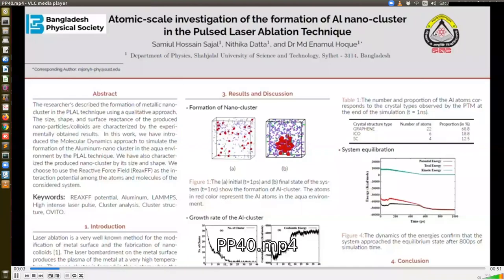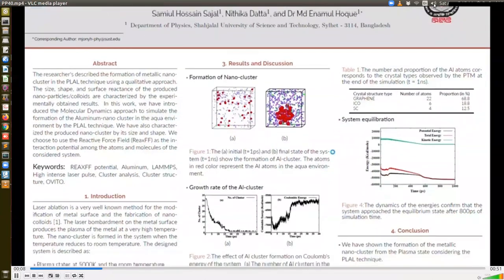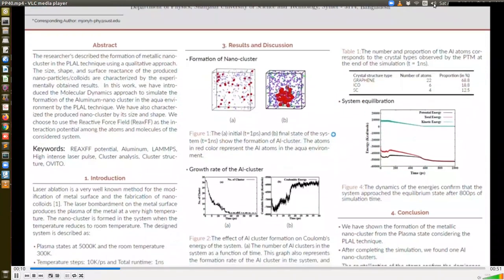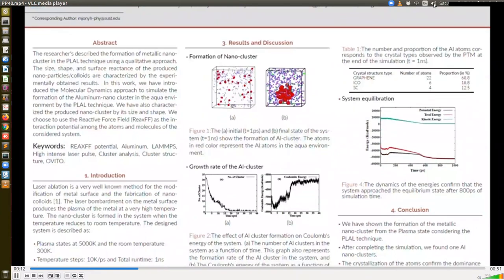In this work, we have done a molecular dynamics simulation to investigate the formation of aluminum nanocluster in the pulsed laser ablation technique using DFT potential. When an intense laser beam pulse on a metal surface, it produces metal plasma at a large temperature. The initial configuration of our simulation is designed at 5000 Kelvin temperature when aluminum is surrounded by water molecules at a plasma state. Here, the work's motive is to observe the changes when the system reached room temperature from 5000 Kelvin and one nanocluster of aluminum was found.